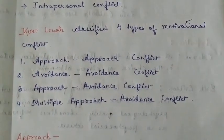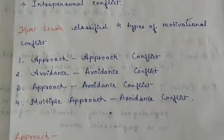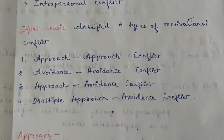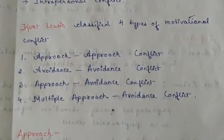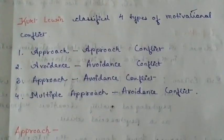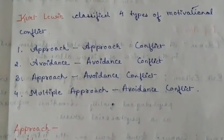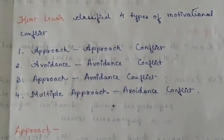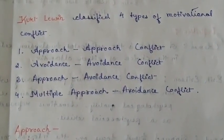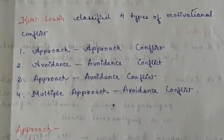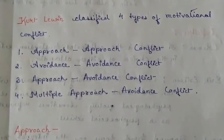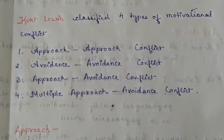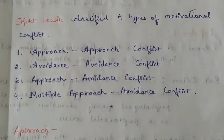Kurt Lewin classified four types of motivational conflict: approach-approach conflict, avoidance-avoidance conflict, approach-avoidance conflict, and multiple approach-avoidance conflict.